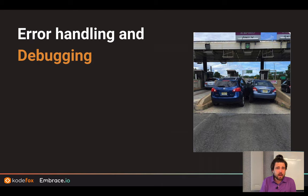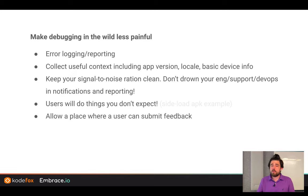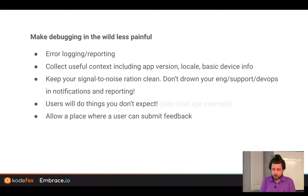Error handling and debugging — it's really easy to debug in the simulator or locally in development. What happens when things go wrong in production? Table stakes: error logging and reporting. Make sure you're collecting the right information — app version, locale, basic device info, OS version. And make sure you're not just collecting crash reports. Log when things are unexpected, when the user gets into a weird state, when server requests aren't working. Log as much as you can to help debug those things.